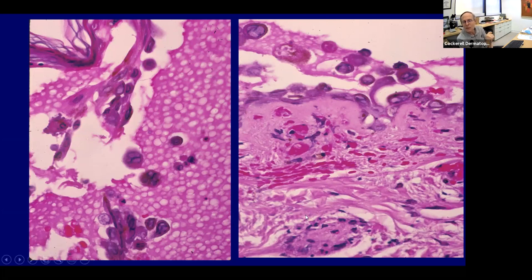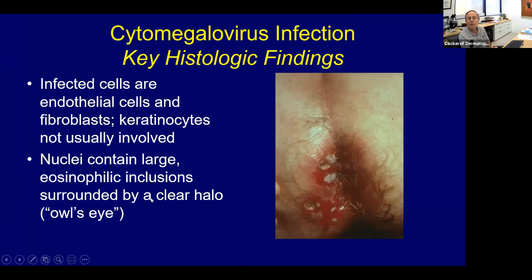They might ask if you can use immunofluorescence to determine herpes — the answer is yes, monoclonal antibodies have been developed against herpes virus infection. Herpes simplex, varicella, and zoster all look histologically the same, so they're not going to ask you to distinguish those.